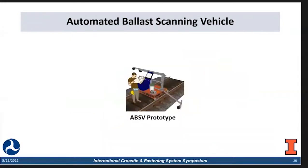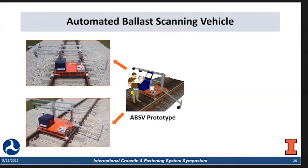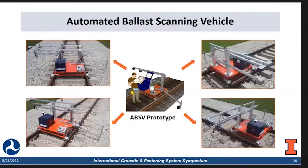We have successfully constructed this automated ballast scanning vehicle prototype. Next, I will show several views of the constructed one. This is the back view of the BSV, this is the side view, and these two are top views from different angles. We have successfully constructed this and it can help us prepare a long scan of the track sections at target locations.